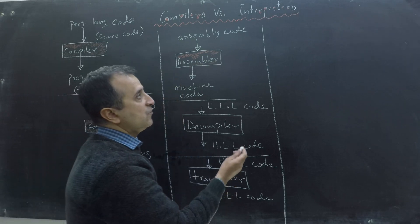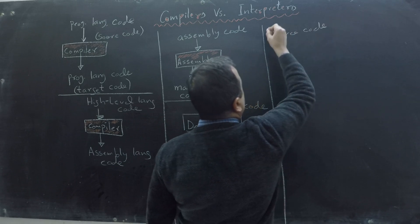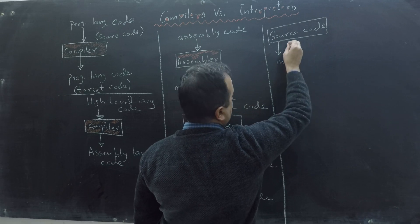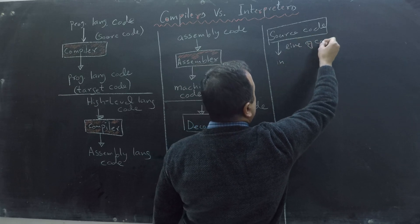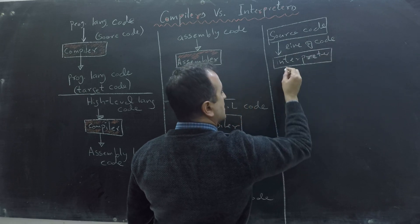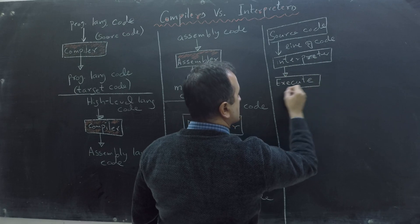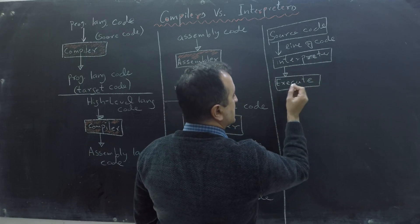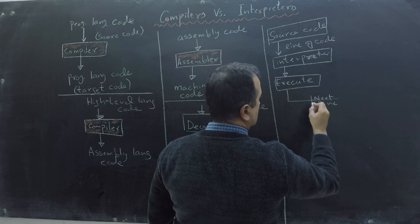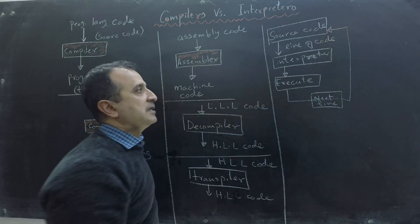Here is the block diagram of an interpreter. We have source code, and the interpreter takes a line of code or a statement from it and then executes that statement. Afterwards, the interpreter takes the next line of code from the source code, and this process continues until the whole program is executed.